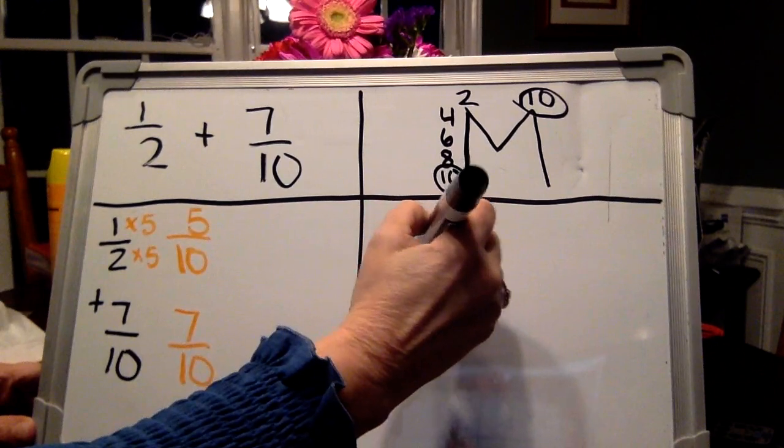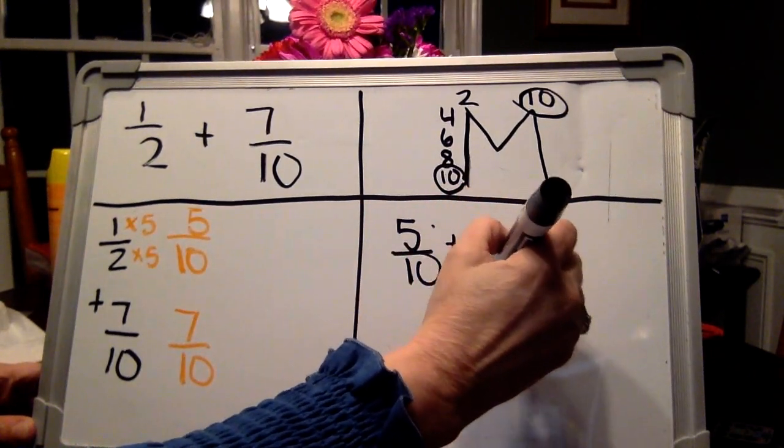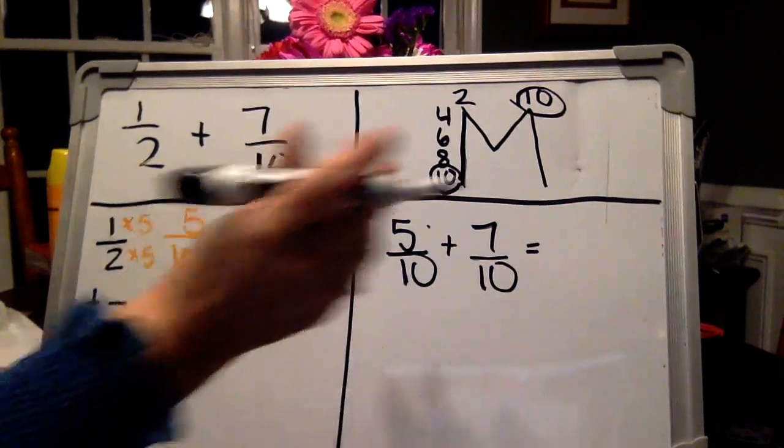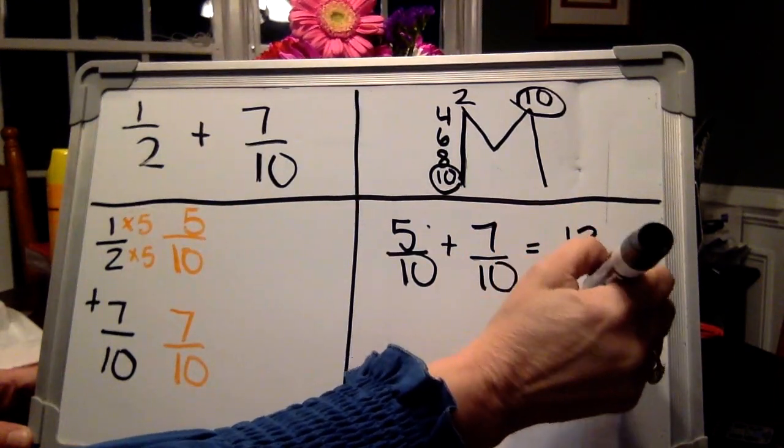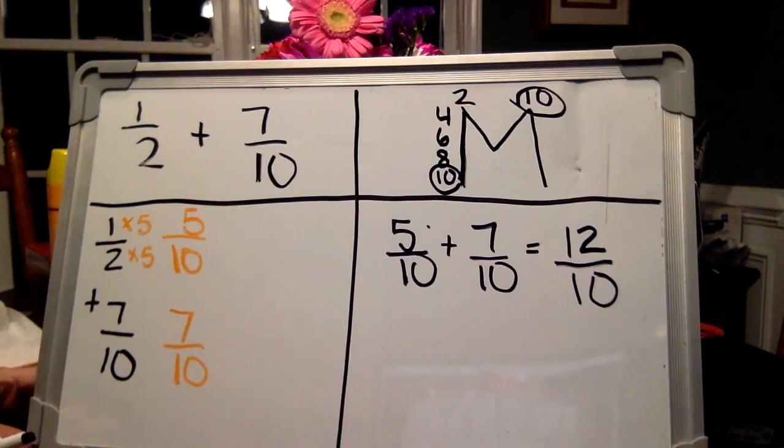Five tenths plus seven tenths equals, I'll give you a second, twelve tenths. Now, did you notice that that was an improper fraction? We can't leave it that way. First, we're going to simplify it. Then we'll change it into a mixed number.